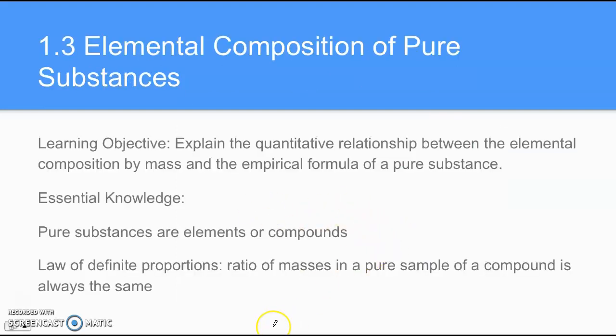Next we have 1.3, elemental composition of pure substances. The learning objective for this section is to explain the quantitative relationship between the elemental composition by mass and the empirical formula of a pure substance. The essential knowledge is pure substances are elements or compounds. And then we also want to know about the law of definite proportions, which states that the ratio of masses in a pure sample of a compound is always the same.